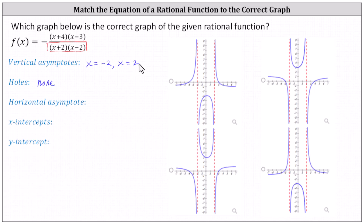It is important to give the vertical asymptotes as equations because they are vertical lines. Now let's find the x-intercepts. To determine the x-intercepts, we want to find the x values that make f of x equal to zero. A fraction equals zero when the numerator is zero and the denominator is not, so we determine x-intercepts by finding the zeros of the numerator.